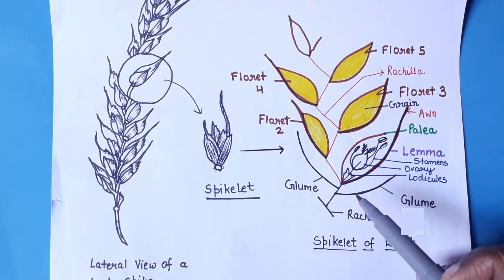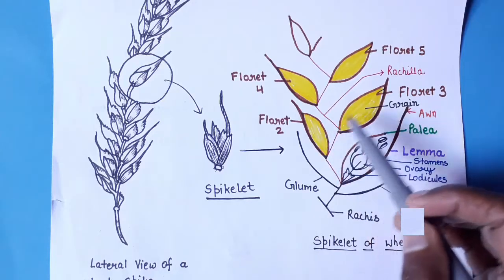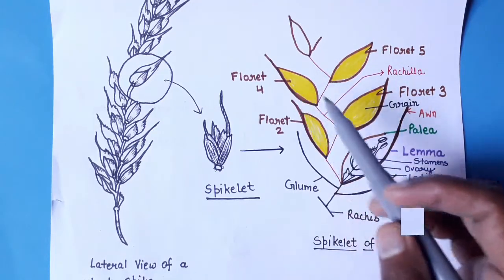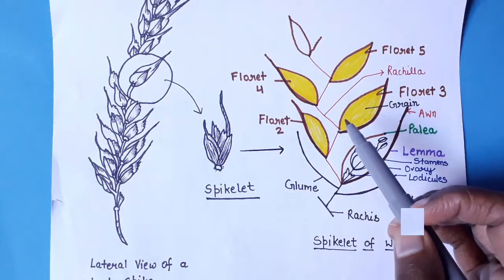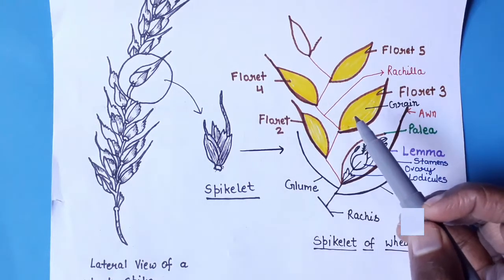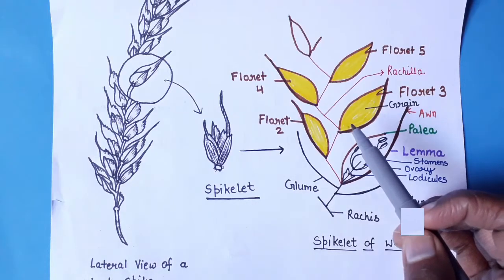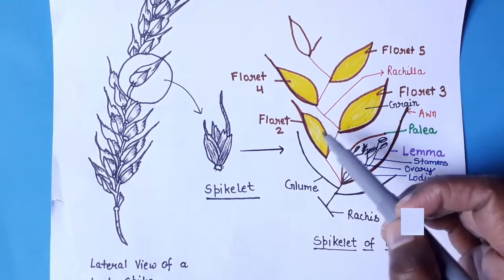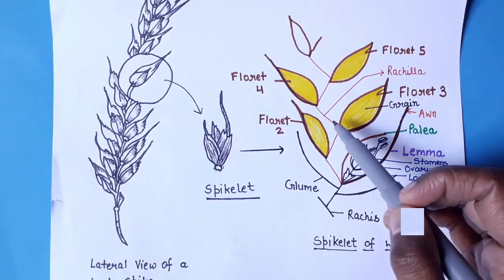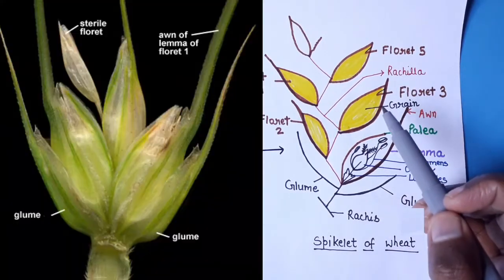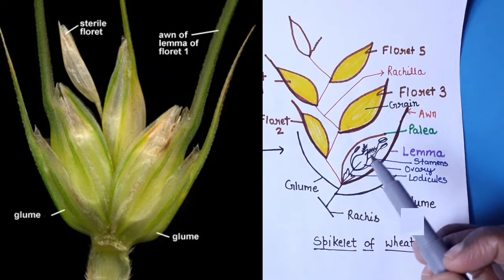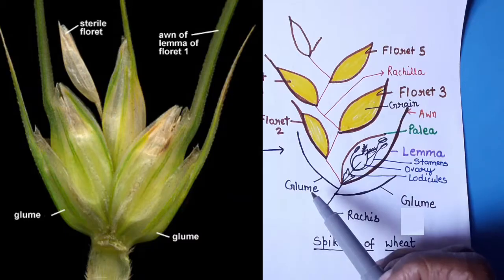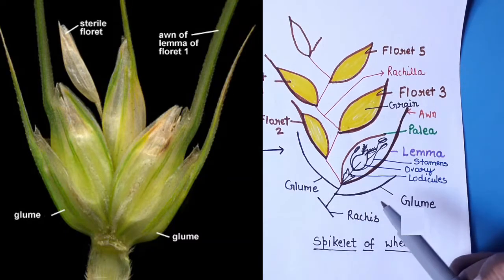Each spikelet basically consists of a set of florets, numbered here as floret one, two, three, four, five, and six — though the exact number may vary, this is just a diagrammatic representation. The florets are attached to one another by means of a structure called the rachila.